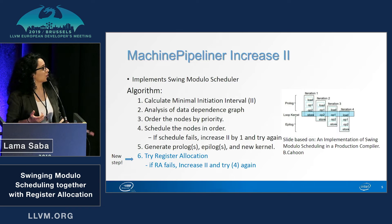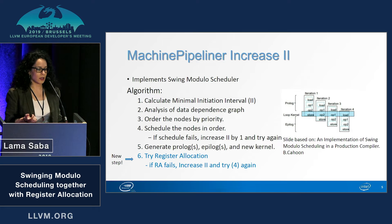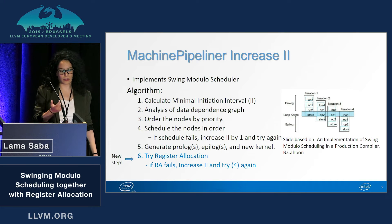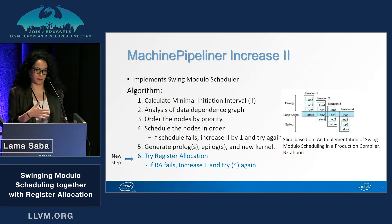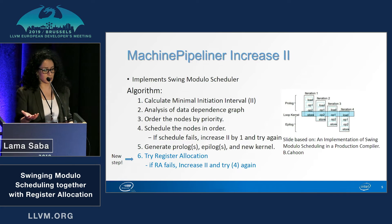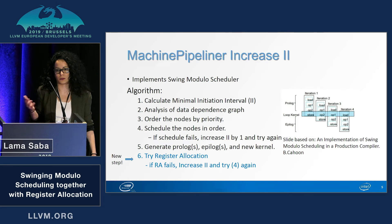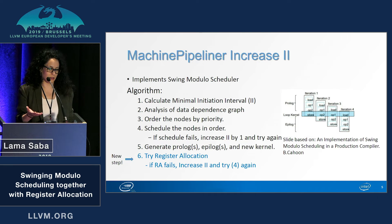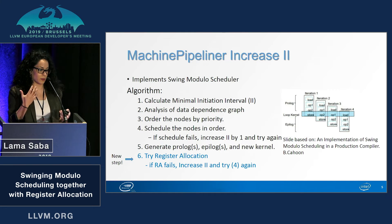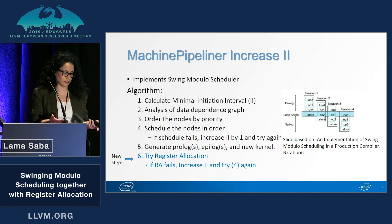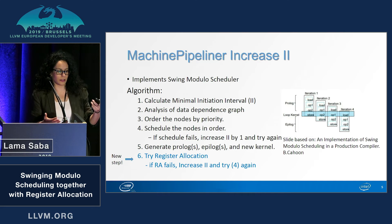If we look at the algorithm of the machine pipeliner, which implements swing modulo scheduler, we see that it already does a similar thing. It calculates the minimal initiation II, analyzes the data dependence graph, orders the nodes by priority, and then schedules the nodes in order. If it fails, it increases the II by one and tries again, which is basically what we want to do too. Once it's successful, it generates prologues, epilogues, and the new kernel. We're essentially adding a new step here to try register allocation, and if we fail, increase the II and go back to step four and try again.